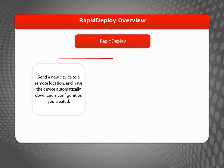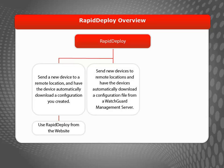There are several ways you can use Rapid Deploy. Perhaps you want to send a new device directly to a remote location that doesn't have a network administrator to set it up. You can create a configuration file for the device, then upload the file to the WatchGuard cloud servers. Or, maybe you use the centralized management feature set and have new remote sites you want to set up through your management server.